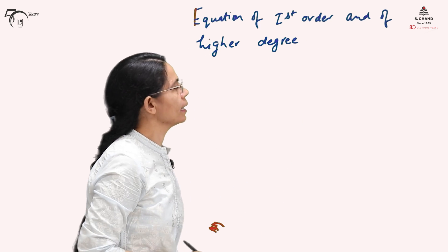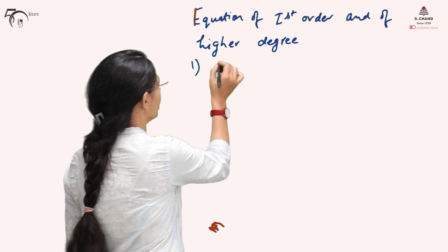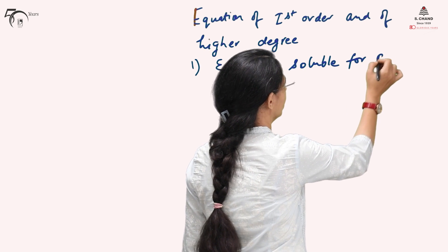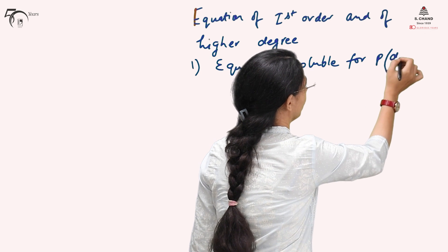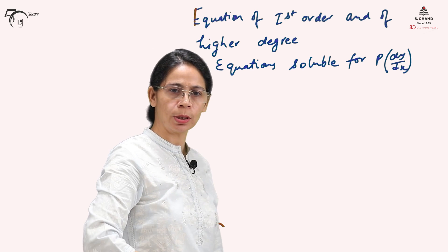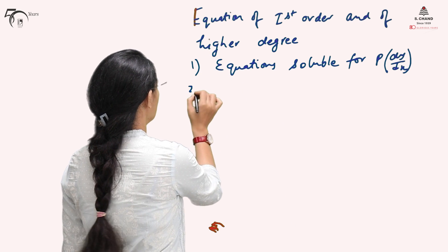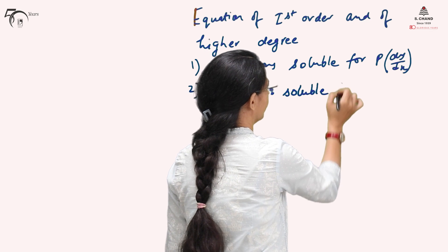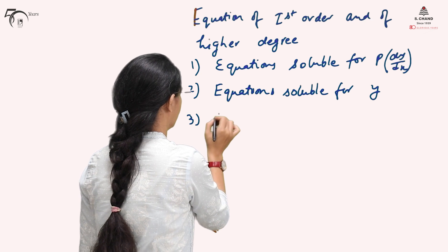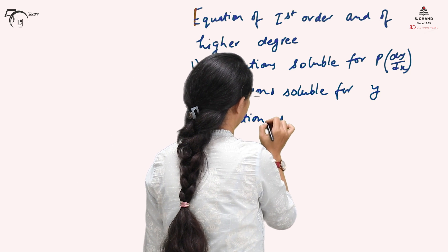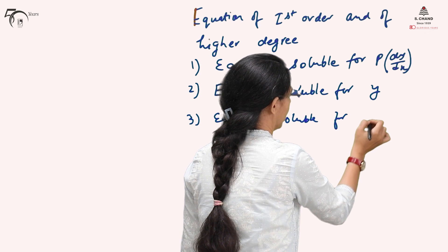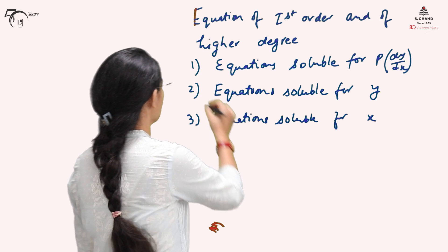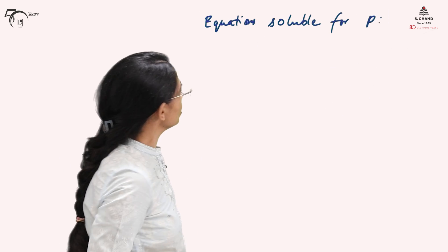This can be categorized into three categories. First is equations soluble for P, where P is the first order derivative dy/dx. Second is equations soluble for y, and third is equations soluble for x. We will take them separately one by one. In the first part of the video we will take equations soluble for P.